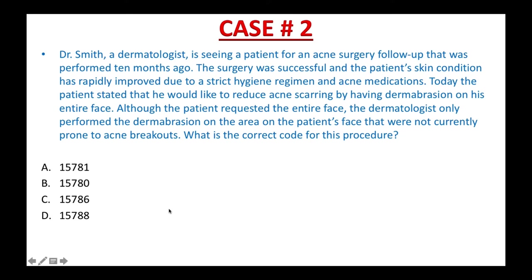Let's do the next case. This case is very straightforward. A, B, C, and D all have different codes: 15781, 15780, 15786, and 15788. So all you need to do now is open your CPT book and look them up to find out what they are. Please pause the video and do it now.